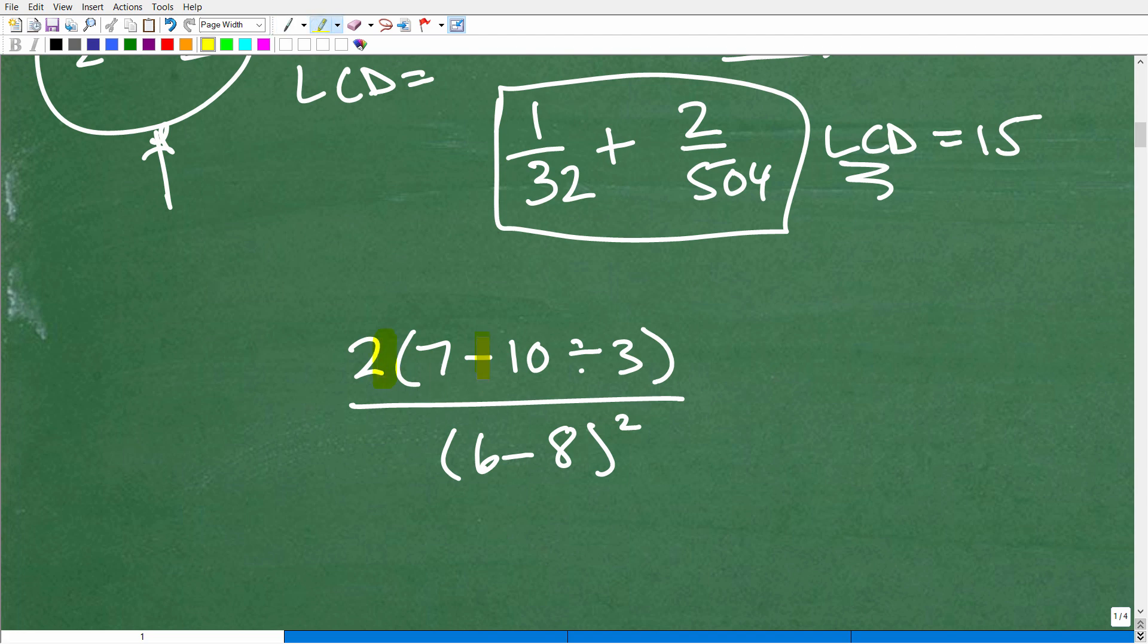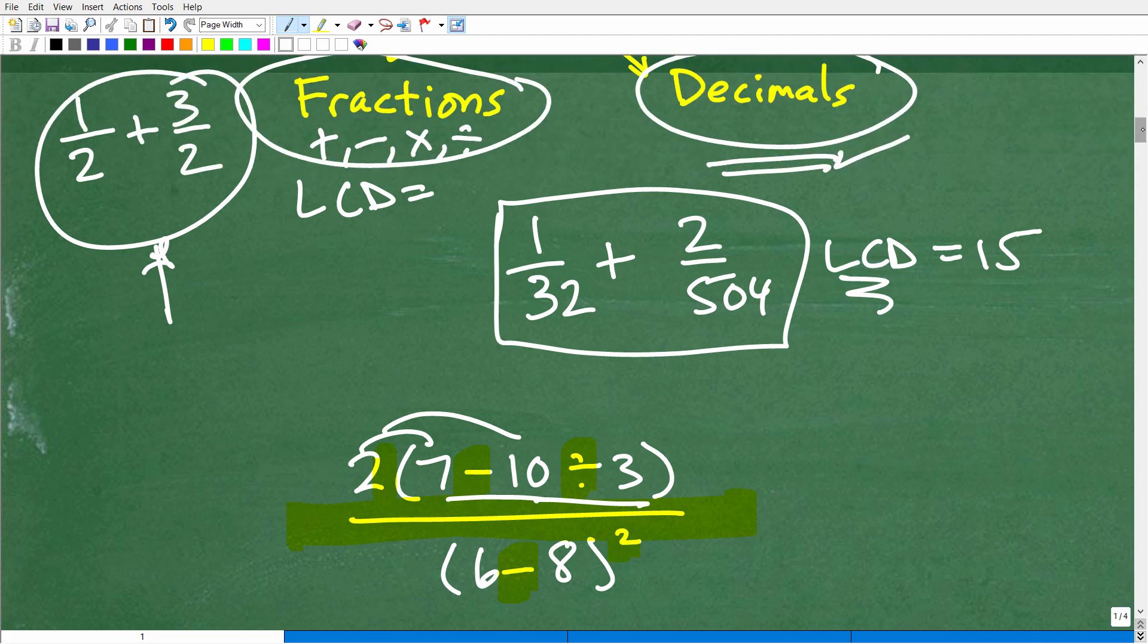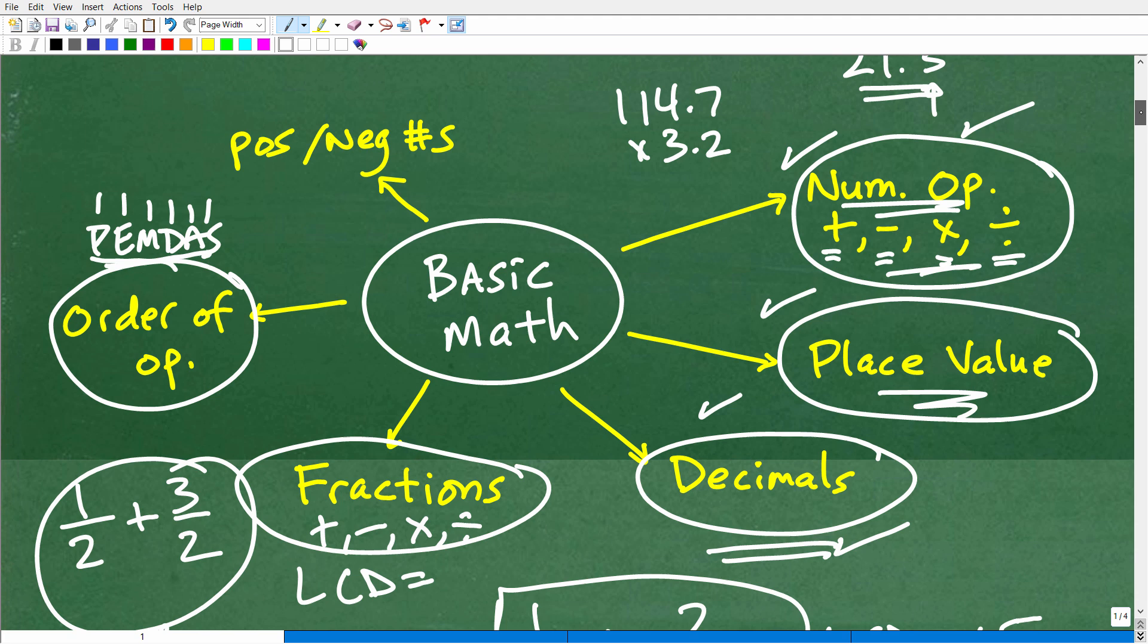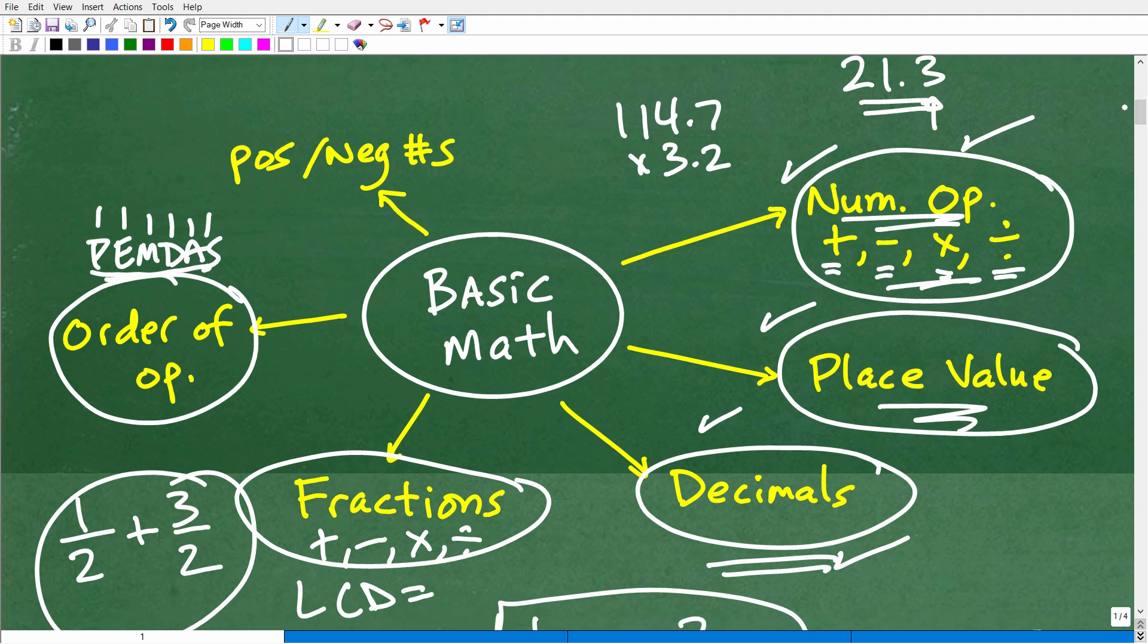For example, if I had 2 times 7 minus 10 divided by 3 over 6 minus 8 squared. I have a lot of different things going on here. I have multiplication, subtraction, division, subtraction, and a power and division. So what is the order I do this problem? Because I can do these number operations in various orders. I can subtract here first, or maybe I can divide first, or maybe I can do multiplication first. So the order you do this particular problem is going to directly affect whether the solution is right or wrong. This is very, very important, order of operations.